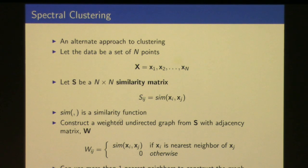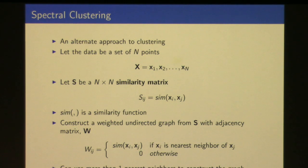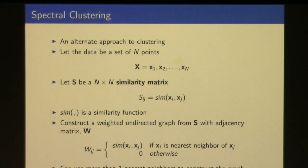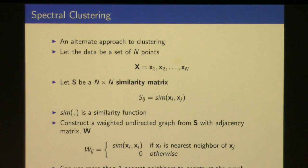From the similarity matrix S you construct an adjacency matrix W. Think of it like a weighted undirected graph — it's symmetric and each edge has a weight, not just 0 or 1. The graph connects two nodes if those two points are nearest neighbors of each other, and the edge weight is the similarity value.